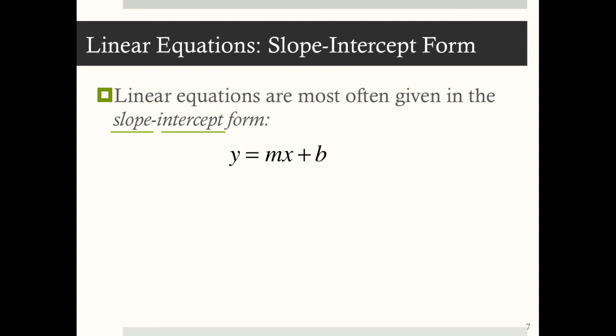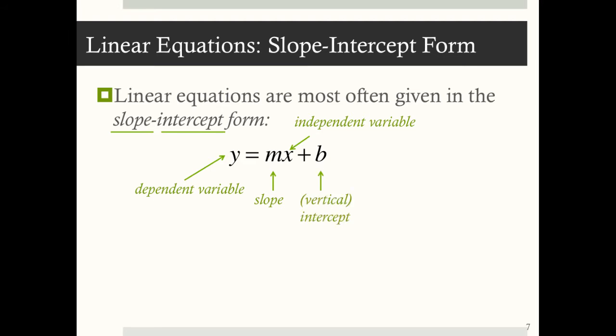Linear equations are most often given in slope-intercept form, and what we really want to focus on for this course is slope-intercept form: y equals mx plus b. Here y is the dependent variable, x is the independent variable, m is the slope (a constant), and b is the vertical intercept (also a constant).